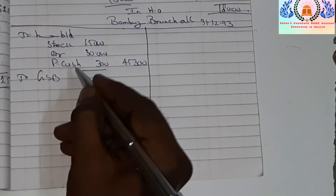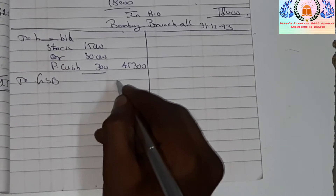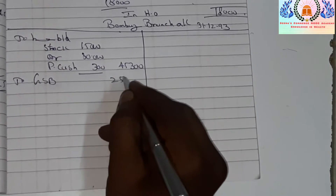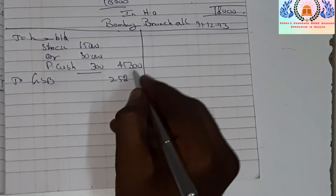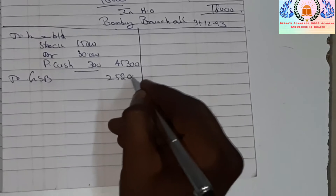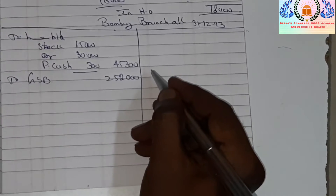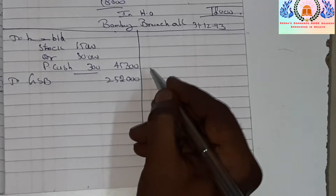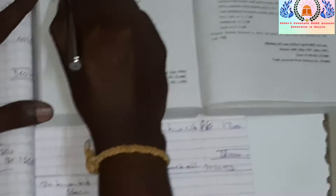The next entry is goods sent to branch — goods sent to branch of 2 lakh 52,000 rupees, that is 2,52,000 rupees.